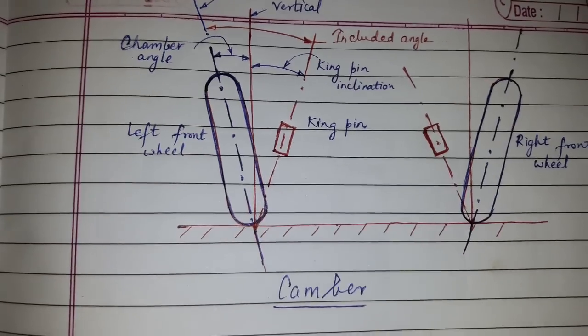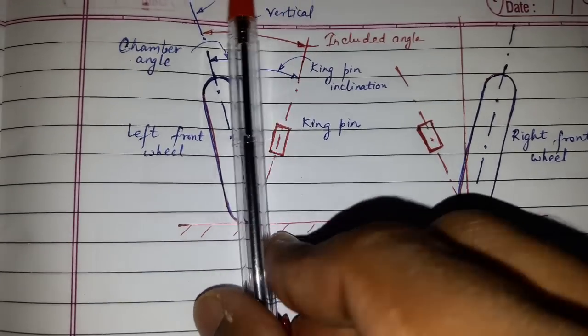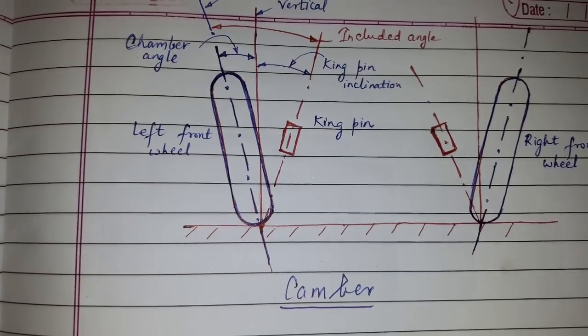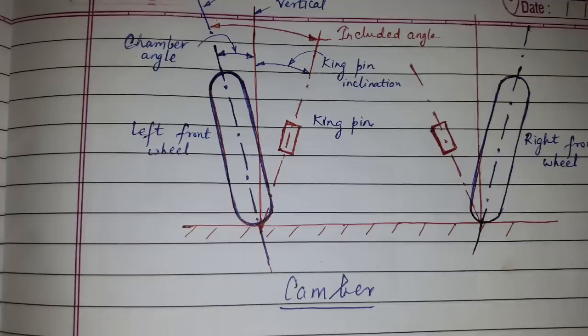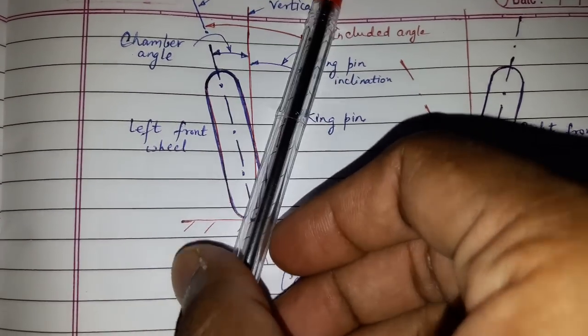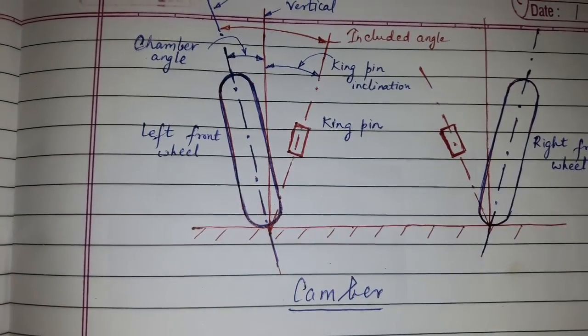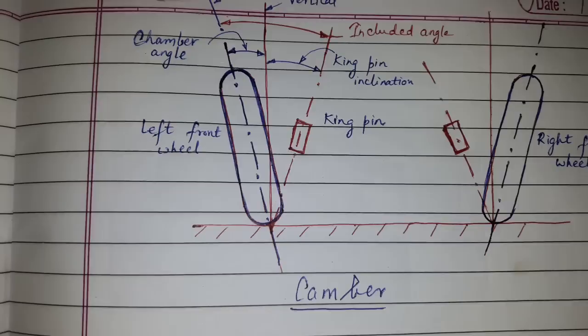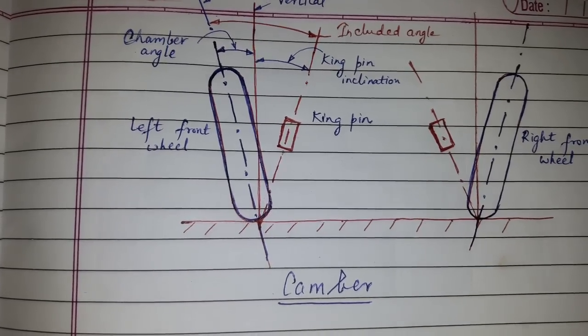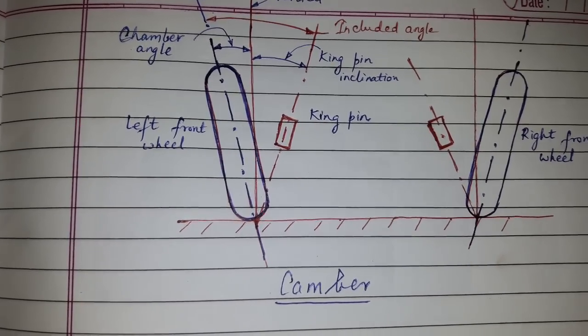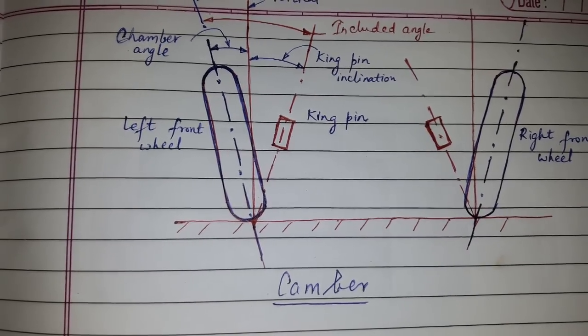When the tilt is outward, it is called positive camber, and when the tilt is inward, it is called negative camber. In this diagram, it is shown as positive camber. The wheels are given positive camber to start...